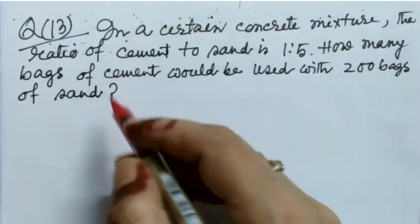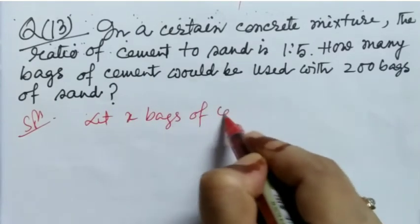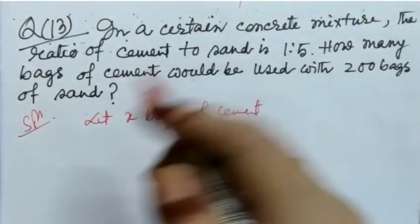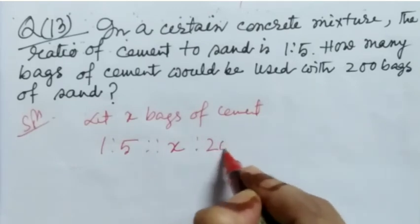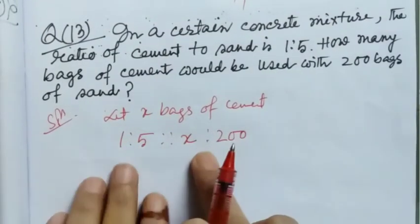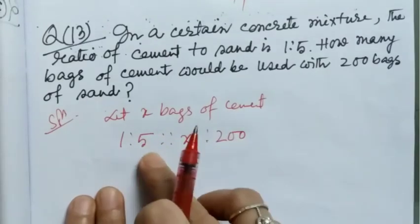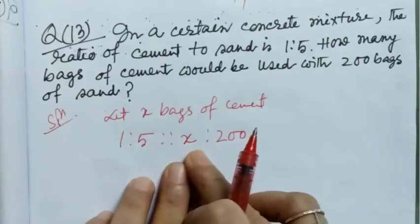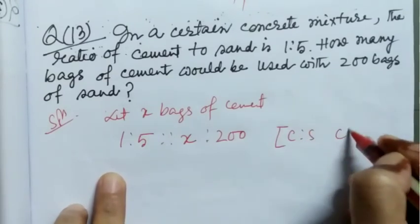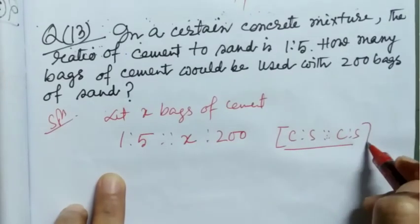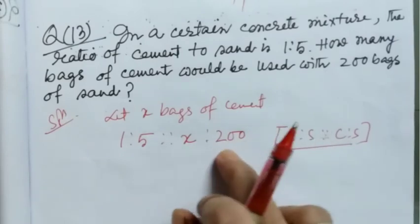So let x bags of cement is required. Then we can write 1 is to 5 is proportional to x is to 200. Here you see in first part cement one part and sand five parts, that means cement to sand is 1 is to 5. And in second case, second part also cement x bags and sand 200 bags, that means cement is to sand. You see cement is to sand and here also cement is to sand, that means order is maintained.